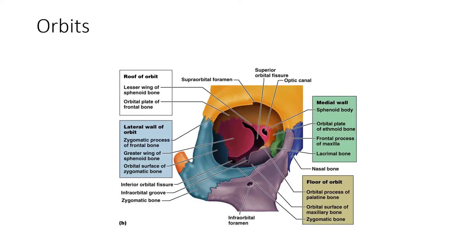Here we're looking at the orbits of the eye. We talked about this in part one — your textbook has a nice picture. Here's your frontal bone, superorbital foramen. Inside you see different fissures and foramen, but let's name the bones first. You have the frontal bone, zygomatic bone, the maxilla, the lacrimal bone, part of the sphenoid bone, and part of the nasal bone right here.